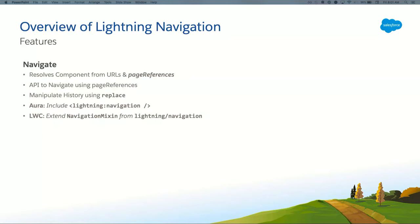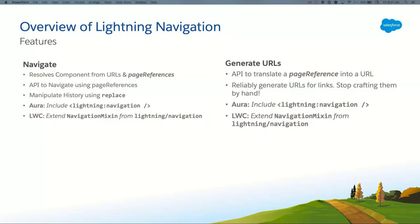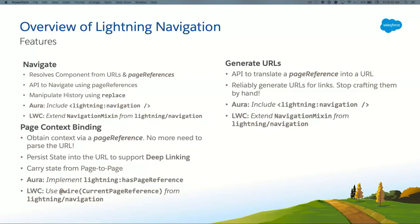There are four main features we provide through the Lightning Navigation APIs. First, of course, is navigation — resolving the component and displaying the page for a given URL, as well as the ability to manipulate the history stack. So if you want to do a redirect, you can use the replace Boolean in the API and it'll replace the history. You can also use it to generate URLs — this is actually a big one. If you're manually crafting URLs, you can use a page reference instead and use the navigation service to generate your URL for you. If we ever want to change the URL structure, we won't break the page references. These are all supported in both Aura and LWC.